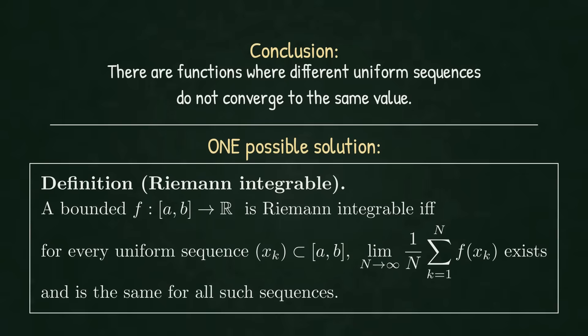When even one uniform sequence disagrees, the function is not Riemann-integrable. The principle of defining an integral through averaging along uniform sequences goes back to Hermann Weyl. He showed that on the unit interval, uniform sequences are enough to recover the usual integral. No rectangles required.